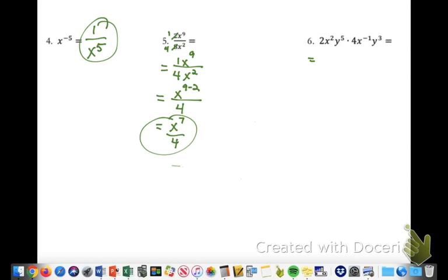All right, number 6. Now we're multiplying. So think of it as like terms. You're going to multiply your numbers together. 2 times 4 is 8.